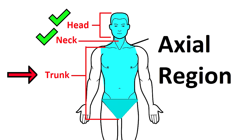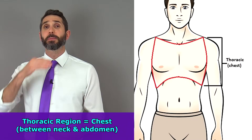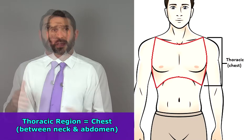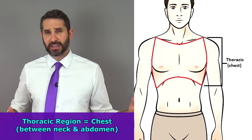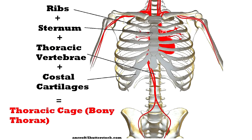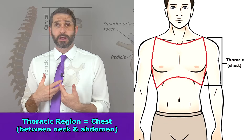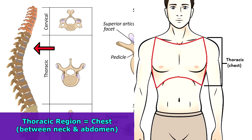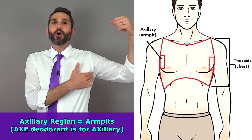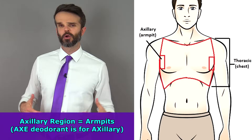Moving down to the trunk, the thoracic region is the region between the neck and the abdomen. If you remember from school when you studied insects, they have a thorax — well, we have a thorax too. You also have vertebrae there called the thoracic vertebrae. The axillary region refers to your armpit region — that's why they make Axe deodorant, it's Axe with an E for your axillary.